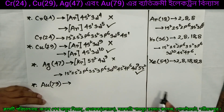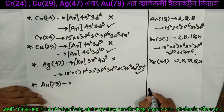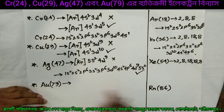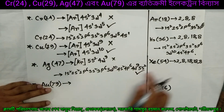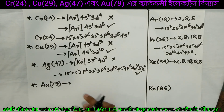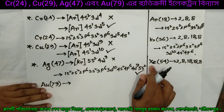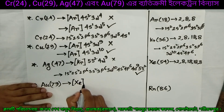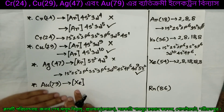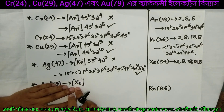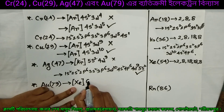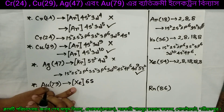This is Radon — atomic number 86, with electron distribution 2, 8, 18, 32, 18, 8. So we are going to start with Xenon as the noble gas core — Xenon, Xenon.